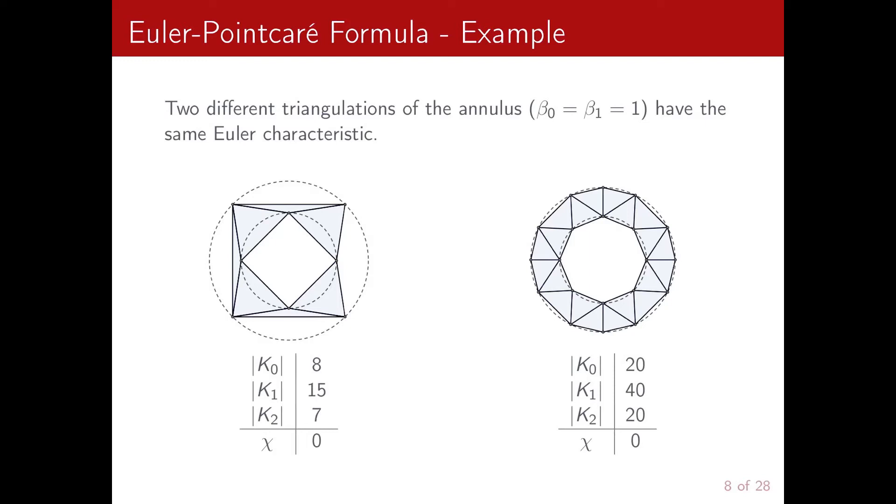So over here you can see two different triangulations of the annulus, which has Euler characteristic equal to zero, because both its zeroth and first Betti numbers are equal to one, and all the other ones are zero. And so you can see that the Euler characteristic is the same for both simplicial complexes.